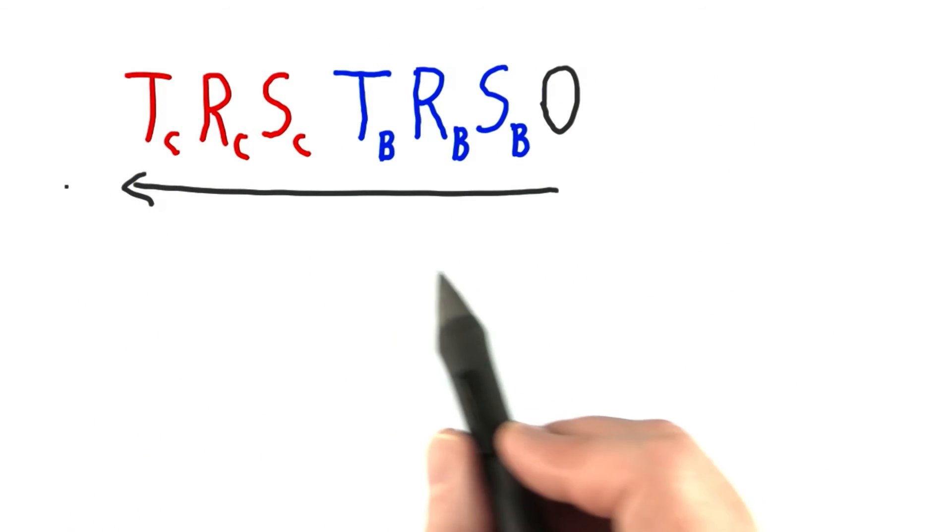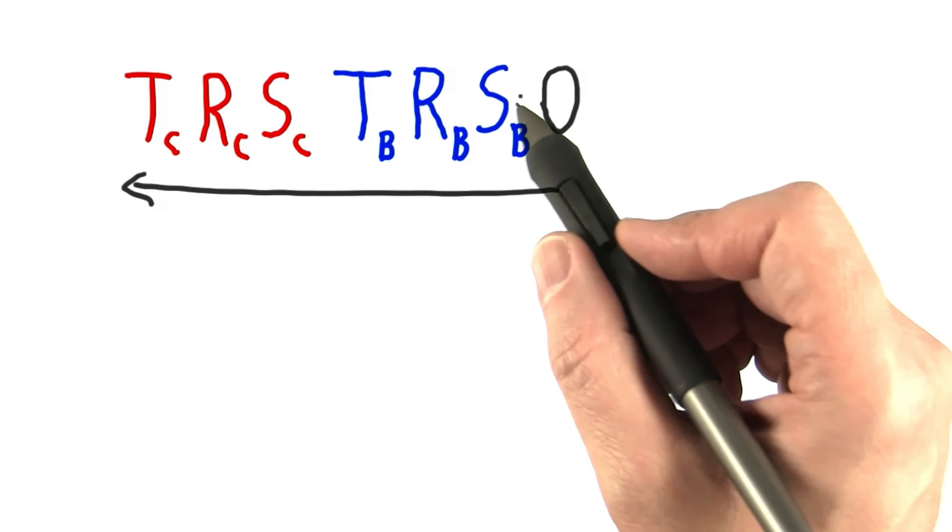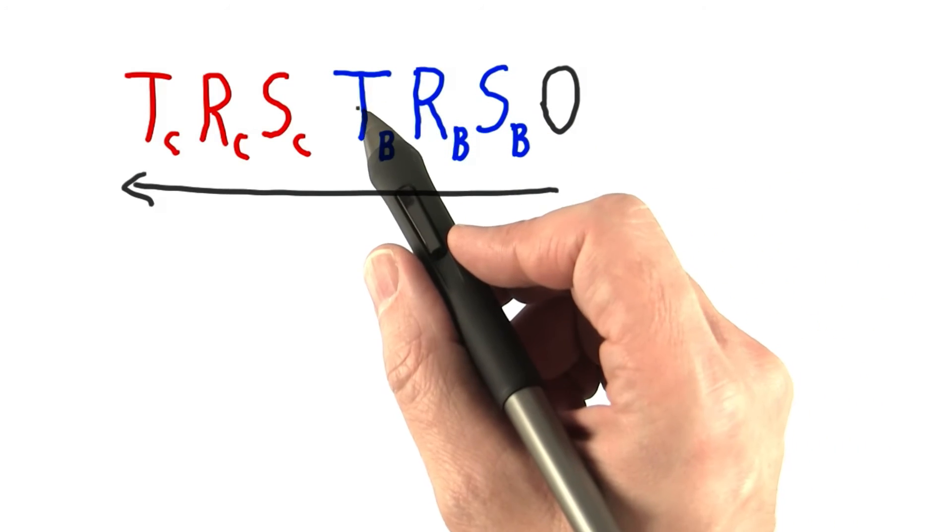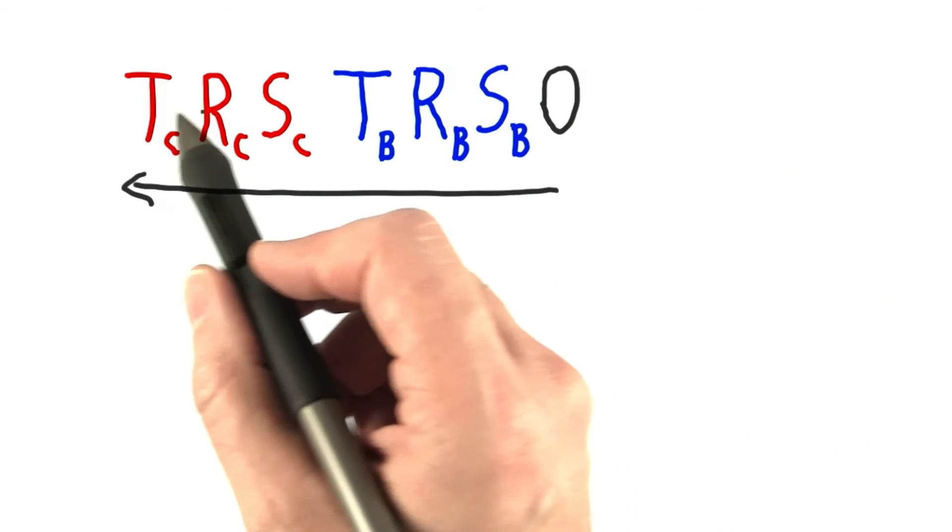Here's a more compact way to write out the order of transforms. The object gets scaled, rotated, and translated, and then scaled, rotated, and translated again.